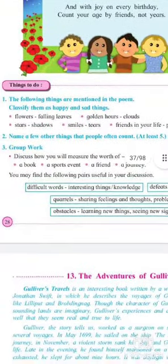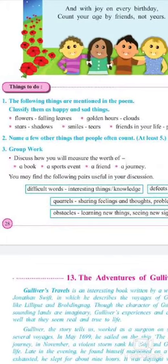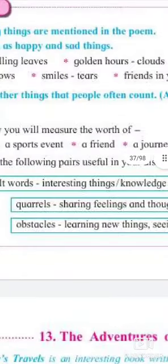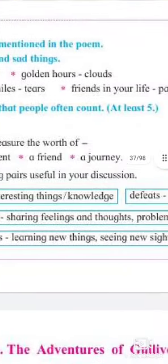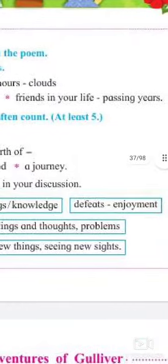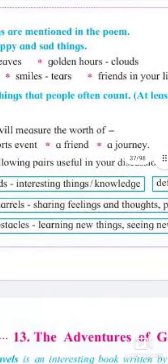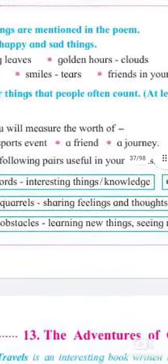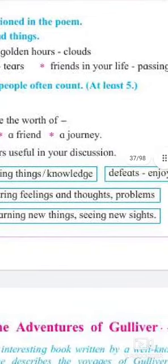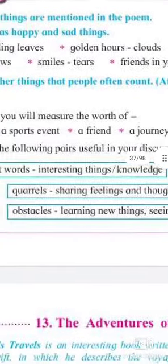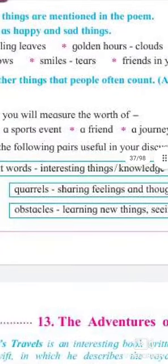You may find the following pairs useful for your discussions. Difficult words and interesting things: knowledge, defeat, enjoyment, quarrels, sharing feelings, thoughts, problems, obstacles. These are the points which you can use in your discussions.